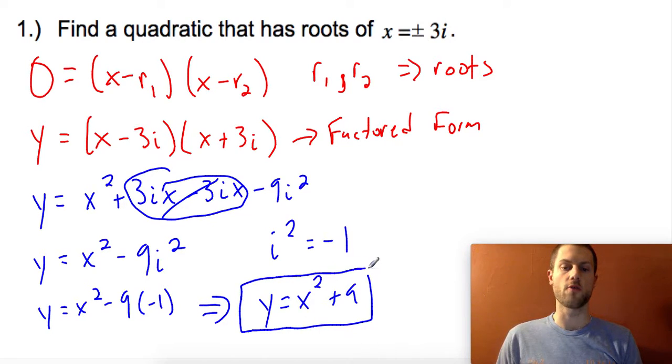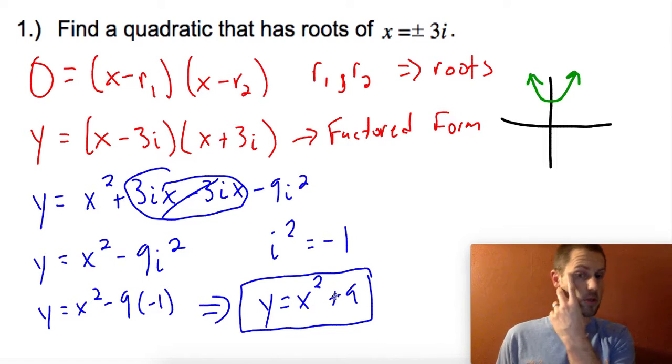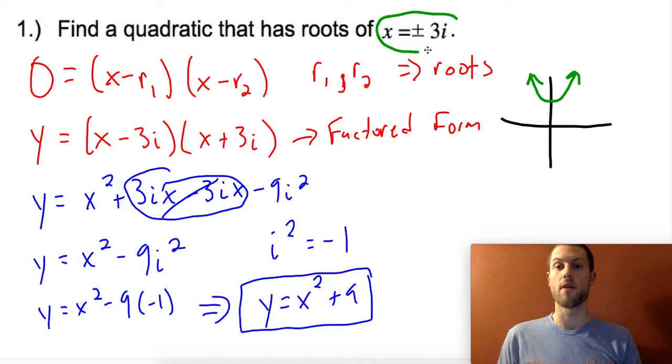That is my standard form equation. This should make sense in relation to the graph. If I graph this quadratic, I'd expect a parabola shifted up 9 units. This has no x-intercepts, which makes sense given that we have imaginary roots for this quadratic.